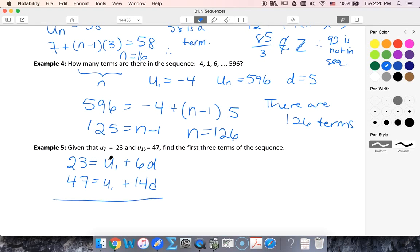I see that this is really easy to subtract and get rid of our U1s. So 14 minus 6, that gives me 8D. 47 minus 23 is 24. Notice in this case D is an integer, but it won't always be an integer. Don't be afraid if you get a quote-unquote weird number.